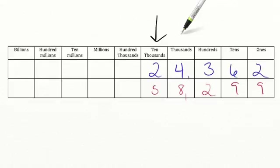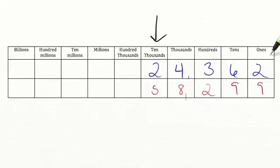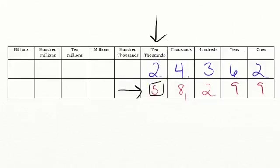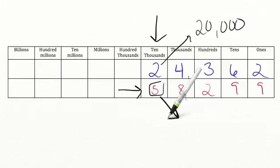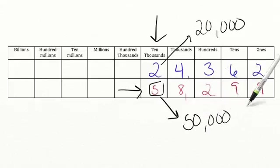Which number has a larger amount in the ten thousands place — 24,362 or 58,299? Since five is greater than two, that means 58,299 is the larger number. If we were to break apart the ten thousands place, the two would represent two ten thousands, or twenty thousand. The five would equal five ten thousands, or fifty thousand. We know that fifty thousand is larger than twenty thousand, so 58,299 is the larger number.